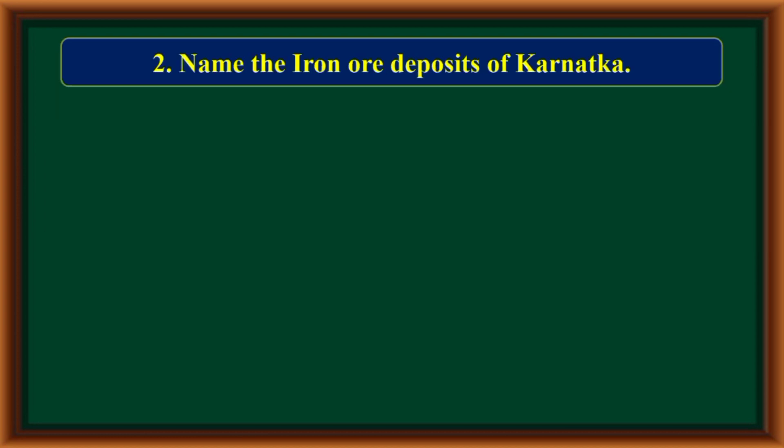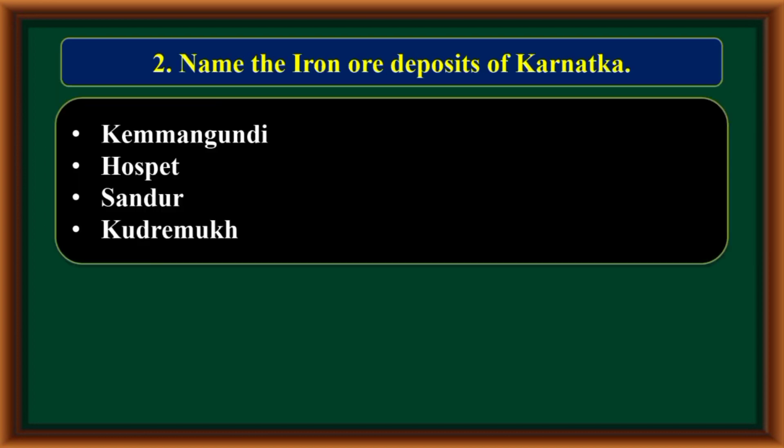Name the iron ore deposits of Karnataka: Kemmangundi, Hospet, Sandor, and Kudremuk.